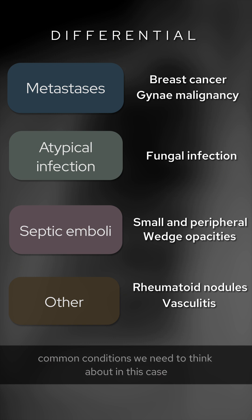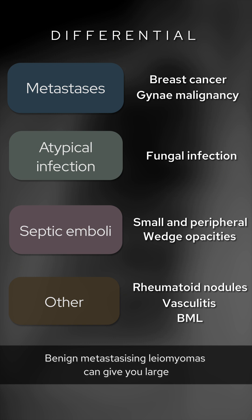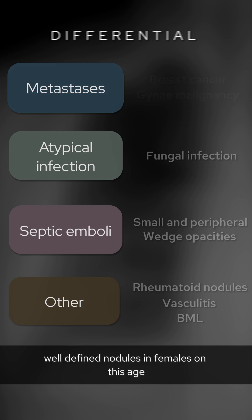In addition, let's also consider vasculitis, namely granulomatosis with polyangiitis, formerly known as Wegener's. Finally, there are less common conditions to think about — in this case, benign metastasizing leiomyomas can give you large well-defined nodules in females of this age.